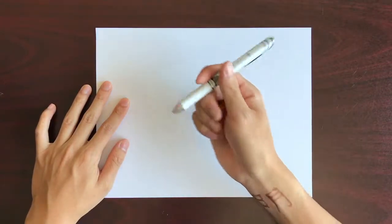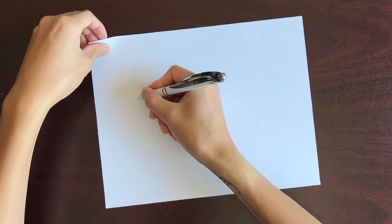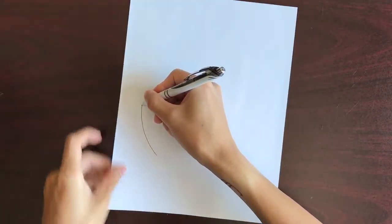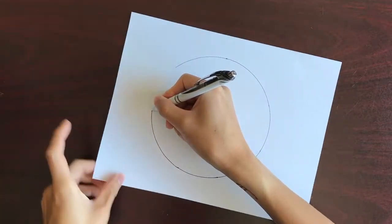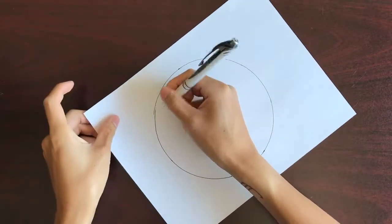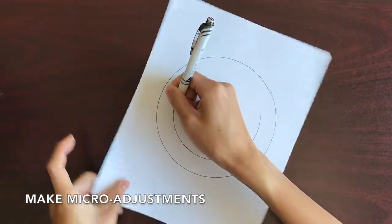We aren't just limited to these four sizes of circles. Within each pivot point, we can adjust our pen grip to make micro adjustments in the size of the circle. There is basically an infinite amount of sizes we can make with this freehand technique.